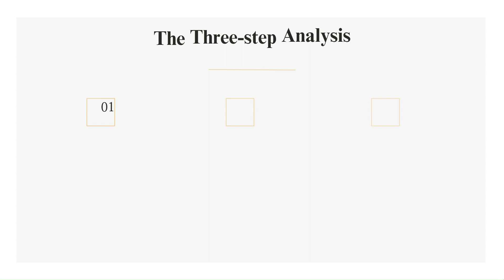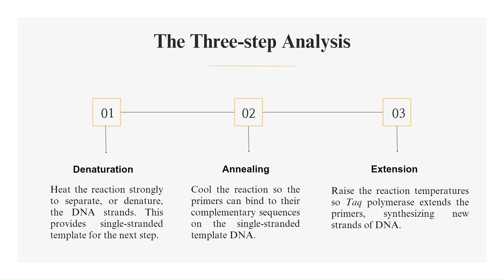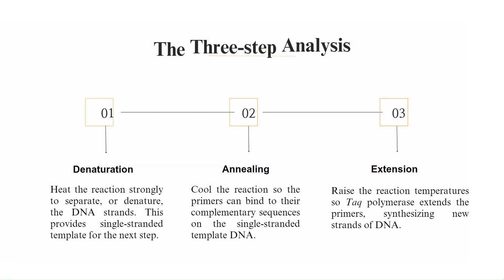It is basically a three-step process. The first step is denaturation, which includes heating the reaction strongly to separate, or denature, the DNA strands. This provides single-stranded template for the next step, followed by annealing, which involves cooling the reaction so the primers can bind to their complementary sequences on the single-stranded template DNA. Finally, extension — by raising the reaction temperature, Taq polymerase extends the primers, synthesizing new strands of DNA.